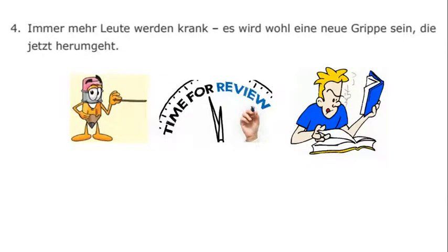The fourth sentence is: Immer mehr Leute werden krank. Es wird wohl eine neue Grippe sein, die jetzt herumgeht. Go ahead and pause that, think about it, and we'll meet back in a moment.